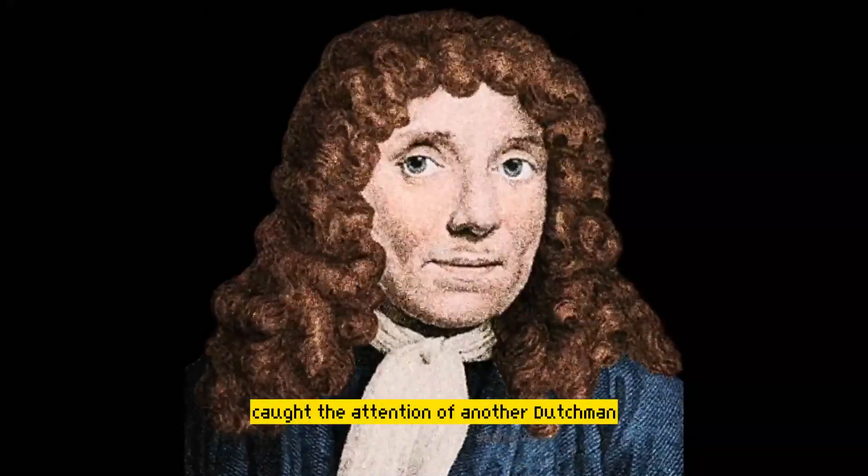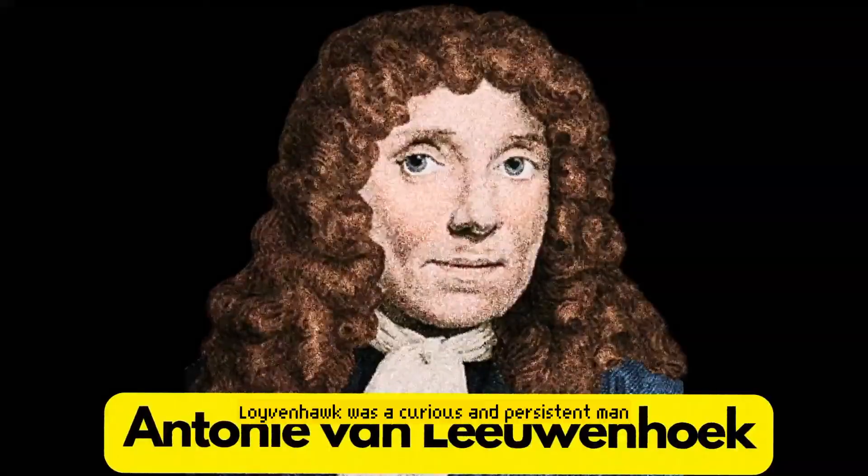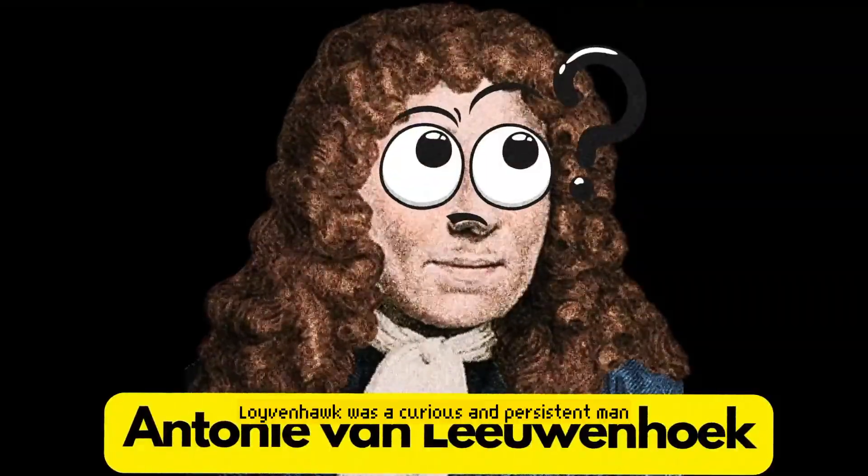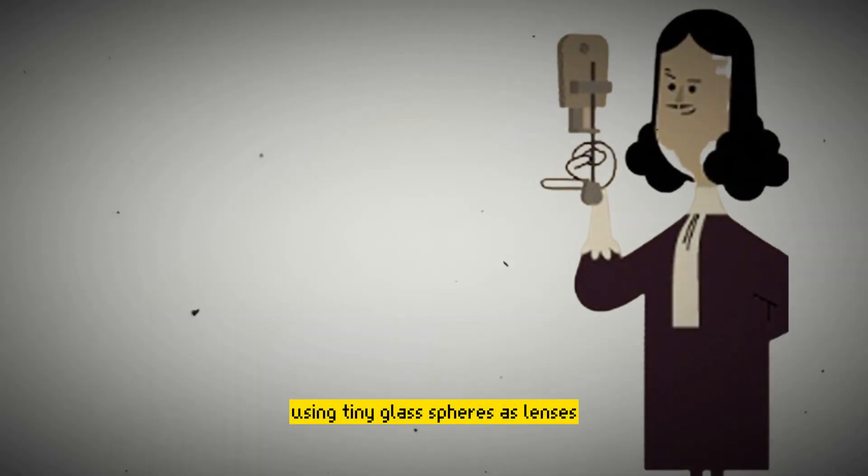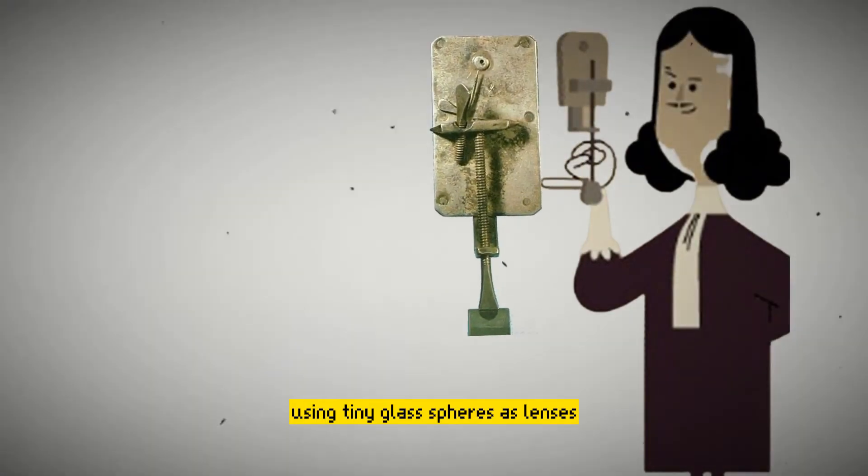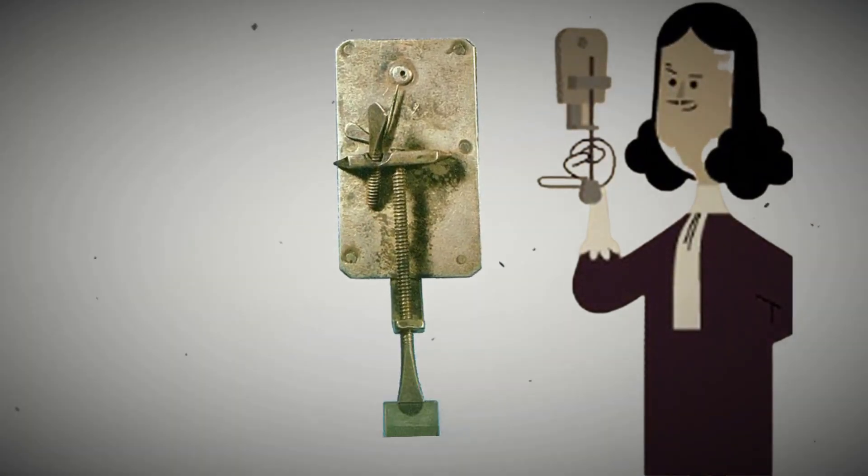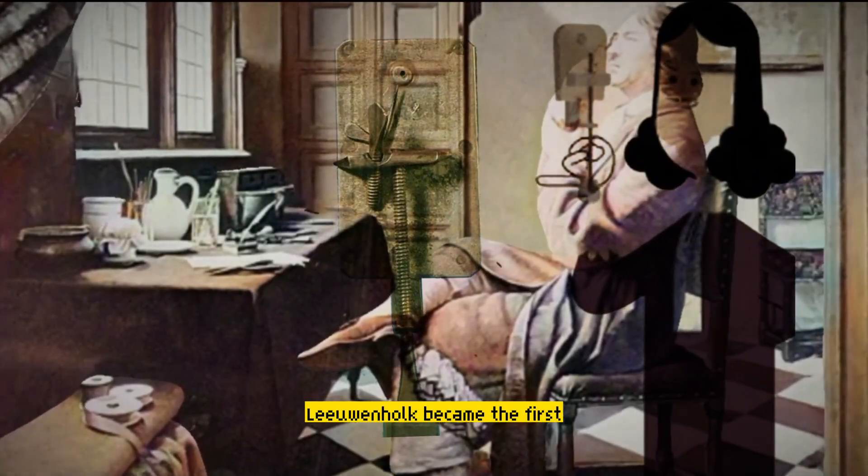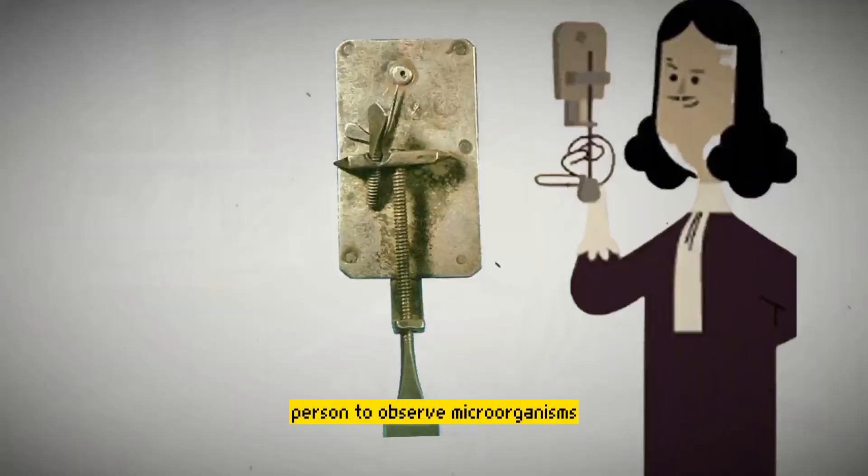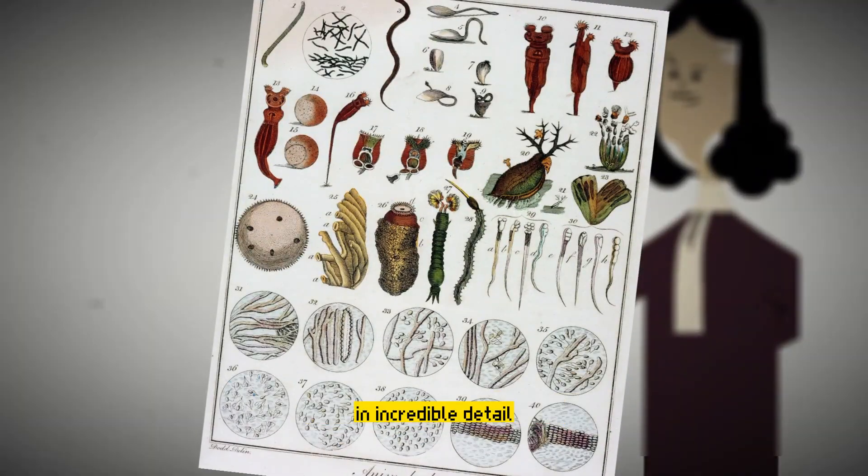Lippershey's invention caught the attention of another Dutchman, Antony van Leeuwenhoek. Leeuwenhoek was a curious and persistent man who took Lippershey's idea and refined it. He crafted his own microscope, using tiny glass spheres as lenses, and achieved an unprecedented level of magnification. With this newly developed microscope, Leeuwenhoek became the first person to observe microorganisms, such as bacteria and protozoa, in incredible detail.